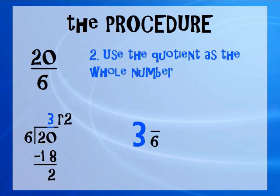Next, we're going to use the quotient as the whole number. That's the quotient up on top. That's the answer. Sometimes we call it the answer. That means 20 divided by 6 is 3 whole times.